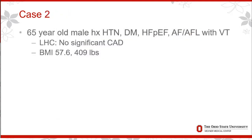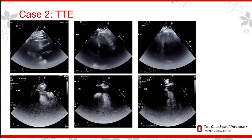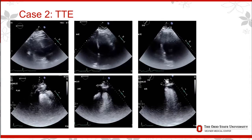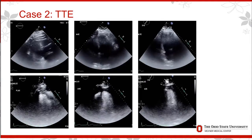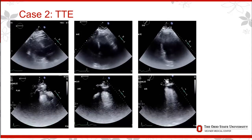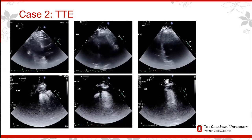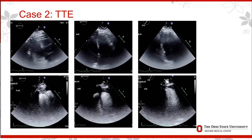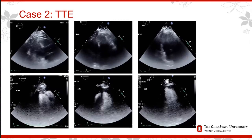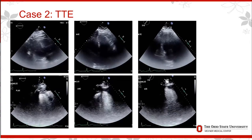The second case is a 65-year-old gentleman with a history of hypertension, diabetes, HFpEF, AFib and flutter, presenting with ventricular tachycardia seen on a monitor. A left heart cath showed no significant coronary artery disease, and he had a BMI of 57.6 and a weight of 409 pounds. Again, the parasternal long, four-chamber, and two-chamber views without and with contrast are shown. On the contrast images you can appreciate the LV a little bit more, but you really can't appreciate much else regarding valve structure, the right ventricle, or much of the atria.